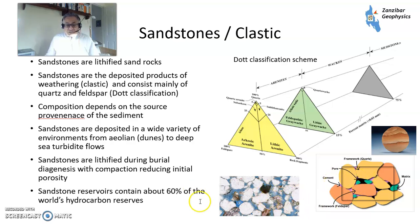Here are some thin sections under the microscope of sandstones. These are grains, the blue is pores, and the grey is cement. So you've got grains, pores, and cements.